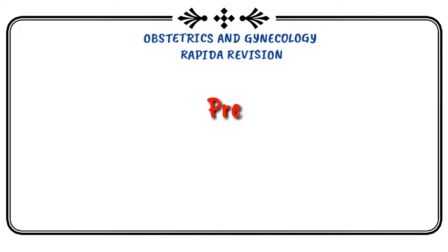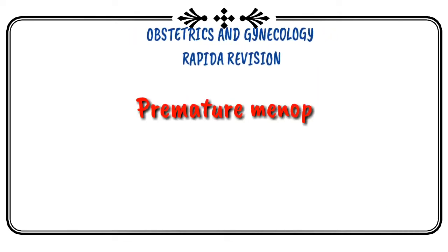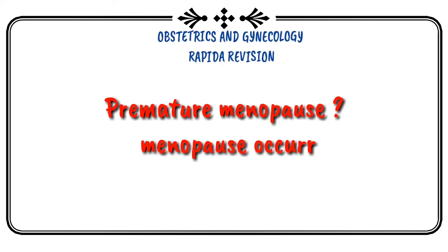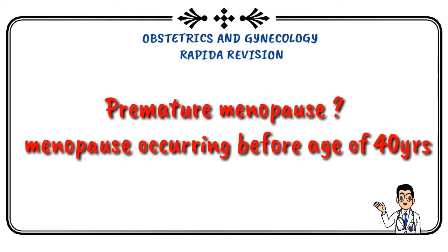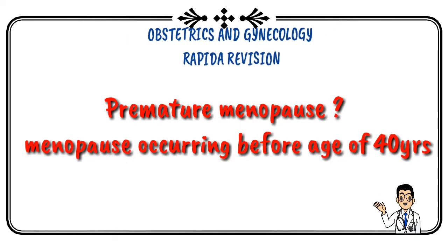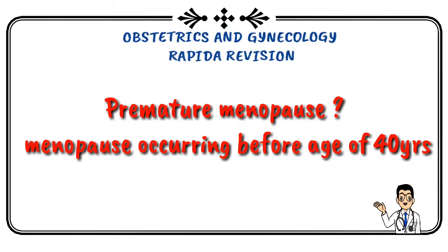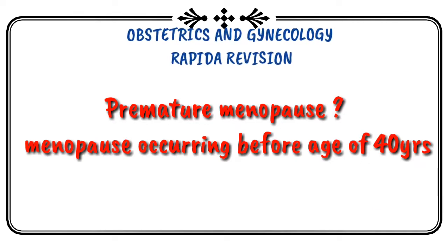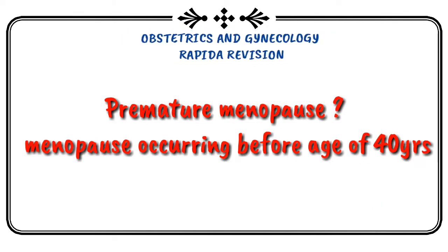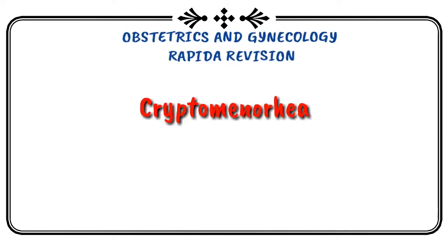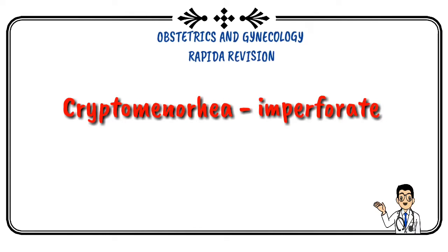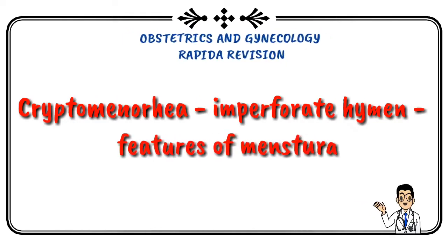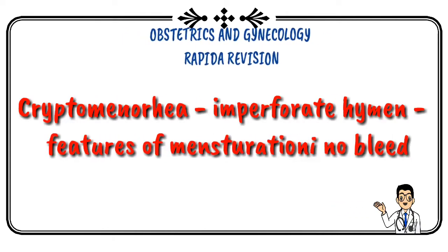Premature menopause is defined as menopause occurring before the age of 40 years. Cryptomenorrhea due to imperforate hymen presents as menstruation with no visible blood.